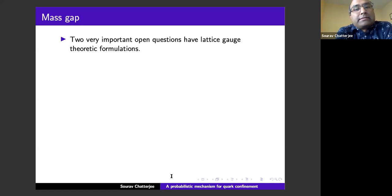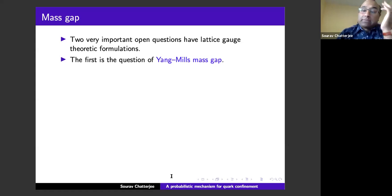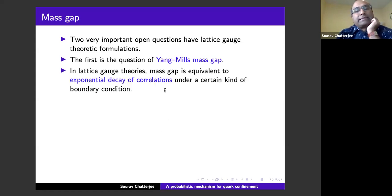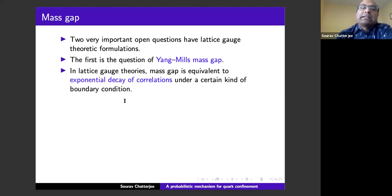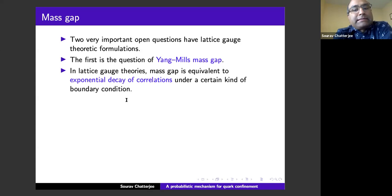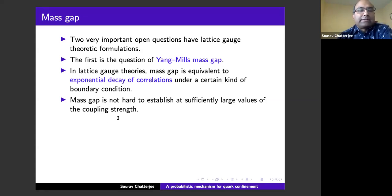Coming to the mathematical questions: there are two very important questions mentioned in the Clay problem description. One is the Yang-Mills mass gap. In lattice gauge theories, there is a lattice version of mass gap — proving exponential decay of correlations under a certain kind of boundary condition. This is not hard to establish under strong coupling (which is like the high temperature phase), but the theories are physically relevant only at weak coupling.